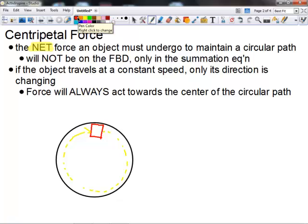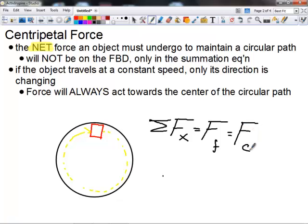I said it's going to be within your summation equation. And we know that the only places that forces that are not on the free body diagram can be in the summation equation is after the second equal sign. So in this case, if we're looking at a top view, we know it's going to be horizontally traveling in a circular path so that some of the forces in the horizontal direction will equal, in this case it's probably going to be friction, which will equal the centripetal force.